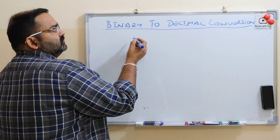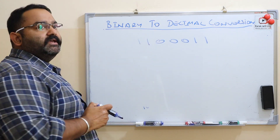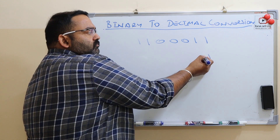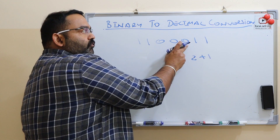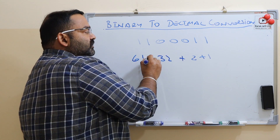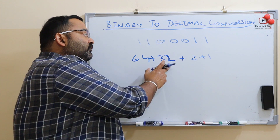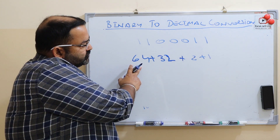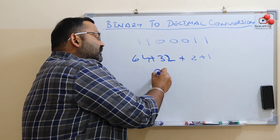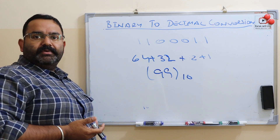Let us take one more example. Now suppose this is my binary number. Simply take the positional values: 1, 2, 4, 8, 16, 32, 64. We have 64 plus 32, which gives you 96, plus 2 is 98, plus 1 is 99. See, the more you practice, the more easy it becomes.